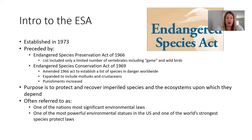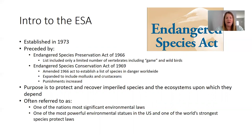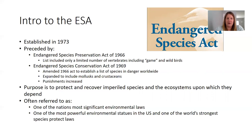The Endangered Species Act is largely a call to keep species from going extinct. It was originally established in 1973, preceded by two acts: the Endangered Species Preservation Act of 1966 and the Endangered Species Conservation Act of 1967. Originally it started with mostly wild birds and game animals, then moved to include other types of animals, increased punishments, and eventually came to what it is today in 1973 — with some modifications since then. The modern Endangered Species Act is always referred back to as this 1973 act.